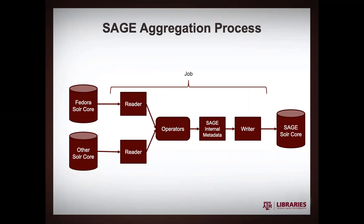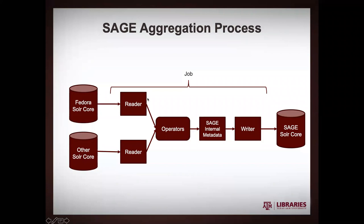This is what the Solr index aggregation process looks like. At the core of it is the job — you run a job to actually move from some sources to some targets. It can read from any number of source Solr cores; we're thinking about Fedora today. Those are mapped to SAGE's internal metadata by a reader, which is essentially a mapping from the core schema to the SAGE internal schema. The operators will be applied to mutate as necessary, and the writer will then do a mapping from SAGE's internal schema to whatever the schema is of the target core.